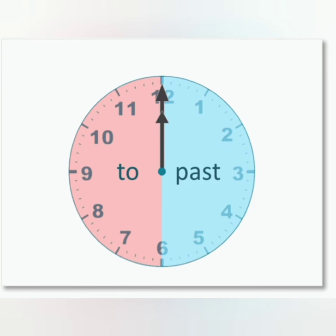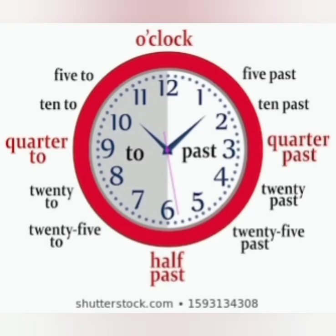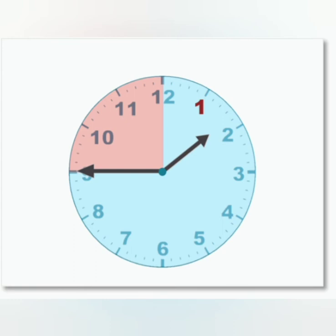Now let us see another part of the clock. I have already told you the right-hand side is past and the left-hand side is to. Now coming to the left-hand side — here, looking at the picture, it is only quarter minutes to move to the next time, that is the next number. So the time will be quarter to two, but we mention it in numbers as one forty-five.